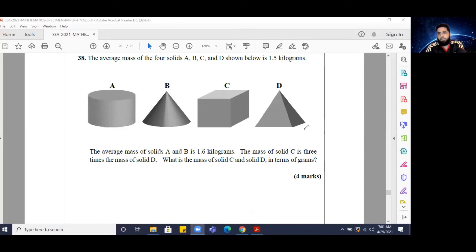This question can seem a little bit intimidating, but actually it's quite easy. Let me explain why. If we know the average mass of the four solids A, B, C, and D is 1.5 kilograms, it means that the combined masses of the four solids divided by the number of solids, which is four, is equal to 1.5.